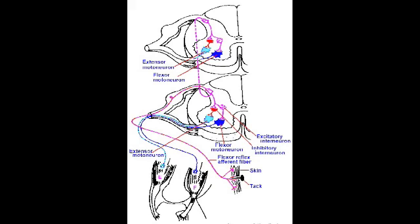This spread of the reflex with a stronger stimulation is called irradiation, and it innervates various levels of our spinal column in order to innervate various muscle groups so that we are protected from certain painful stimuli.